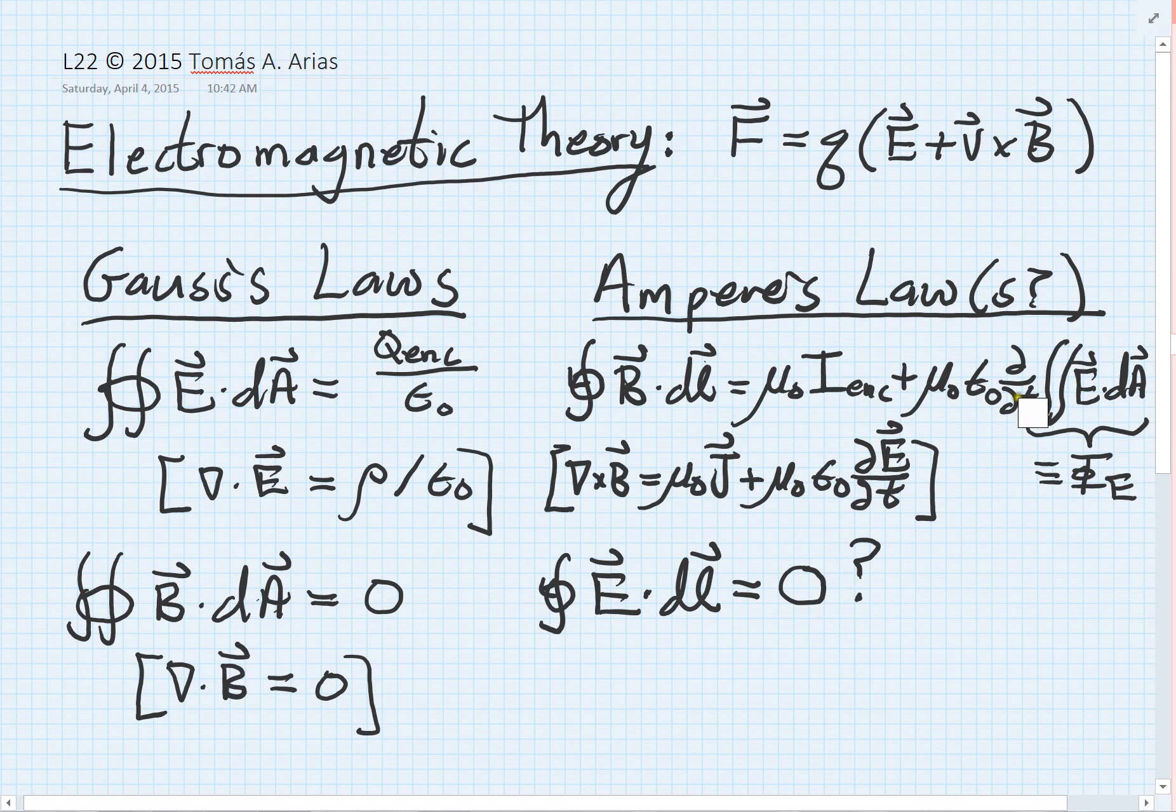But we still have this remaining question: might there be some additional term that's analogous to this time derivative of electric flux? Might there be some magnetic flux derivative associated with this term? That's something we will look at later in the course. This gives you, I hope, an overall feel for where we are. Truth be told, we almost have the complete theory. There indeed is some additional term here that we will be discussing coming up.